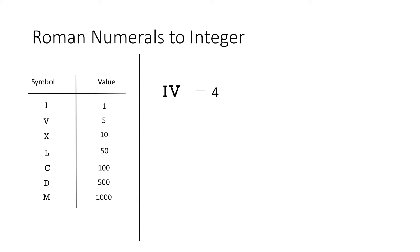So what we are actually doing here is comparing the symbols from right to left. If a symbol with less value comes to the left of a symbol with more value, then we subtract the value of the symbol on the left from the value of the symbol on the right. Otherwise, if the symbol on the left has a value greater than or equal to the symbol on the right, we add their values.